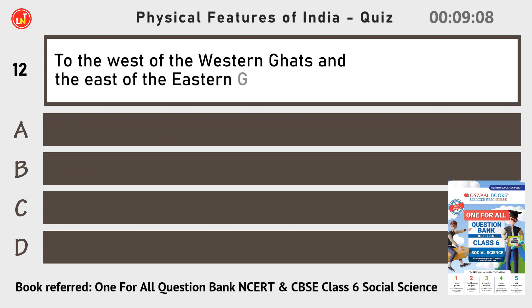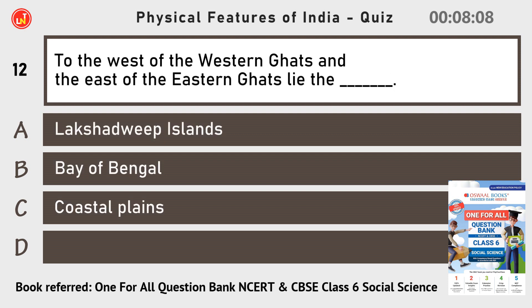To the west of the Western Ghats and the east of the Eastern Ghats lie the — Coastal Plains.